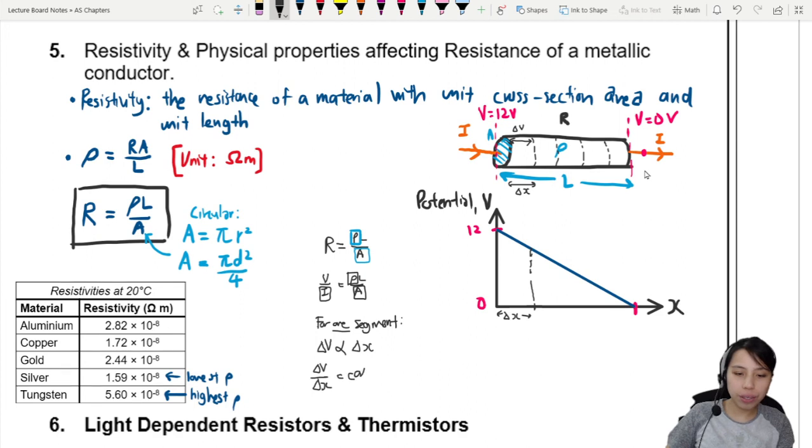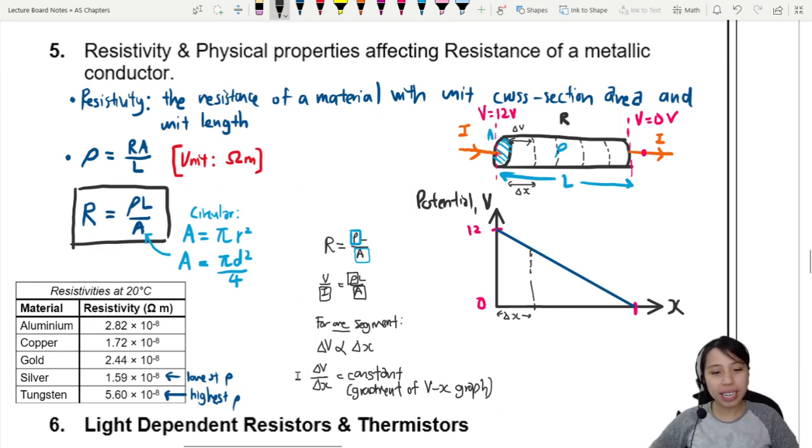We are going to look at just one little segment. For one segment, the V here really means potential difference. So potential difference is proportional to the length of that little segment, which is now called ΔX. If the potential difference is proportional to tiny segment length, then we can say that ΔV over ΔX is constant. ΔV over ΔX is the gradient of the graph. So this is the gradient of our V-x graph.